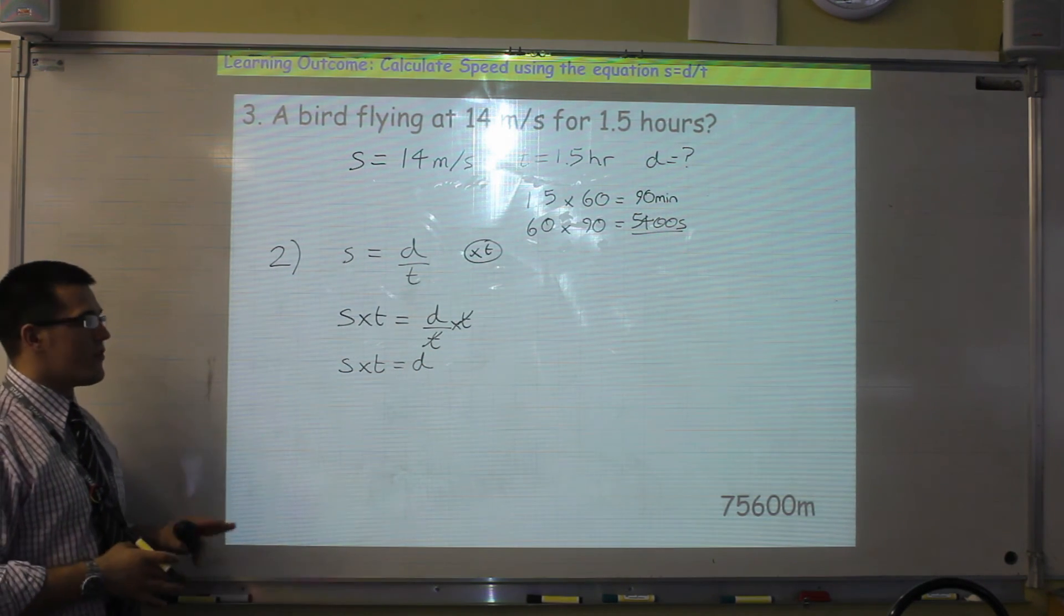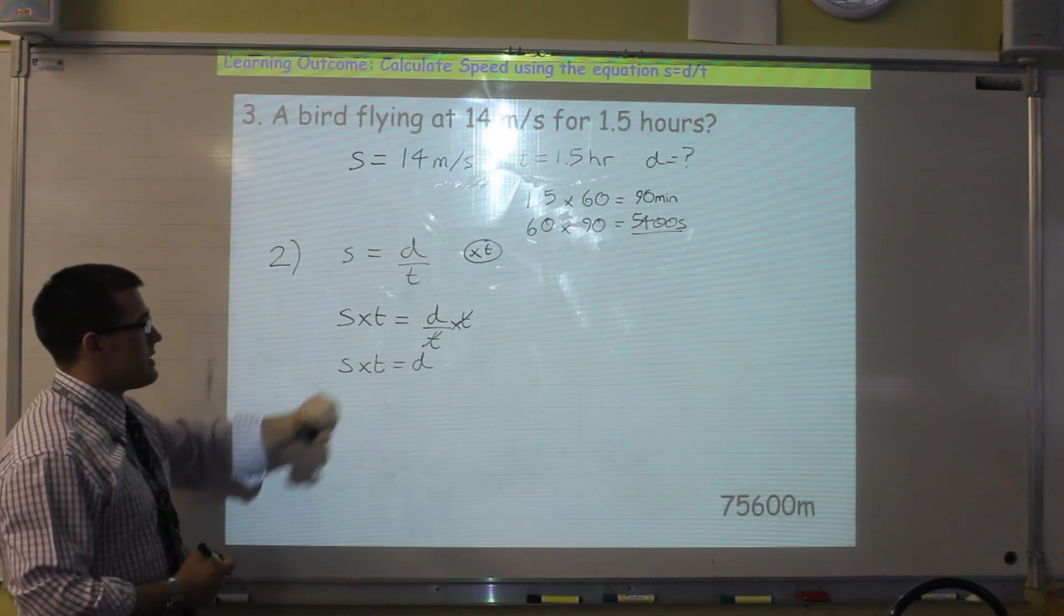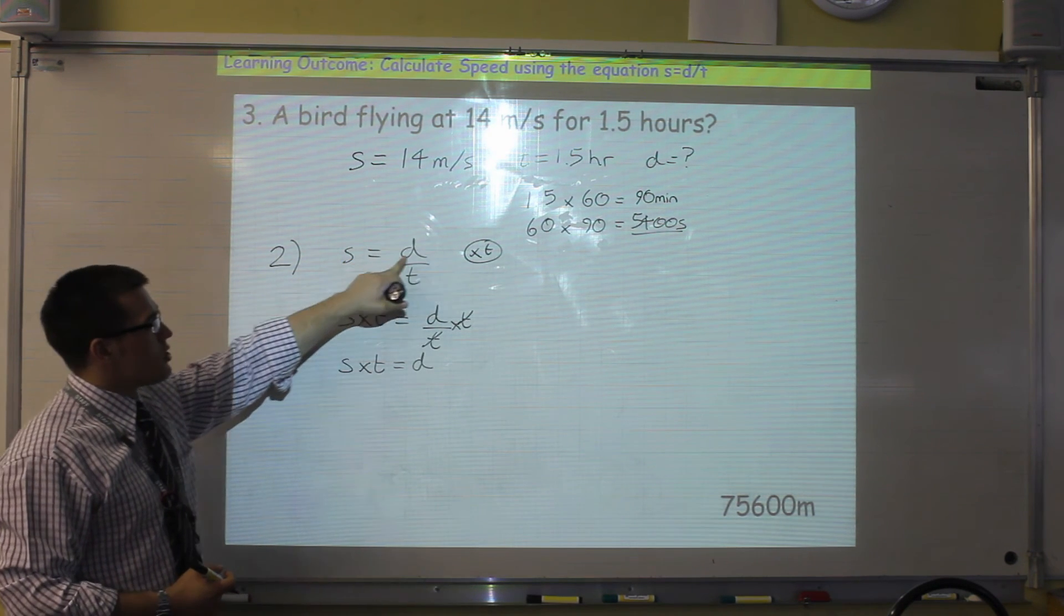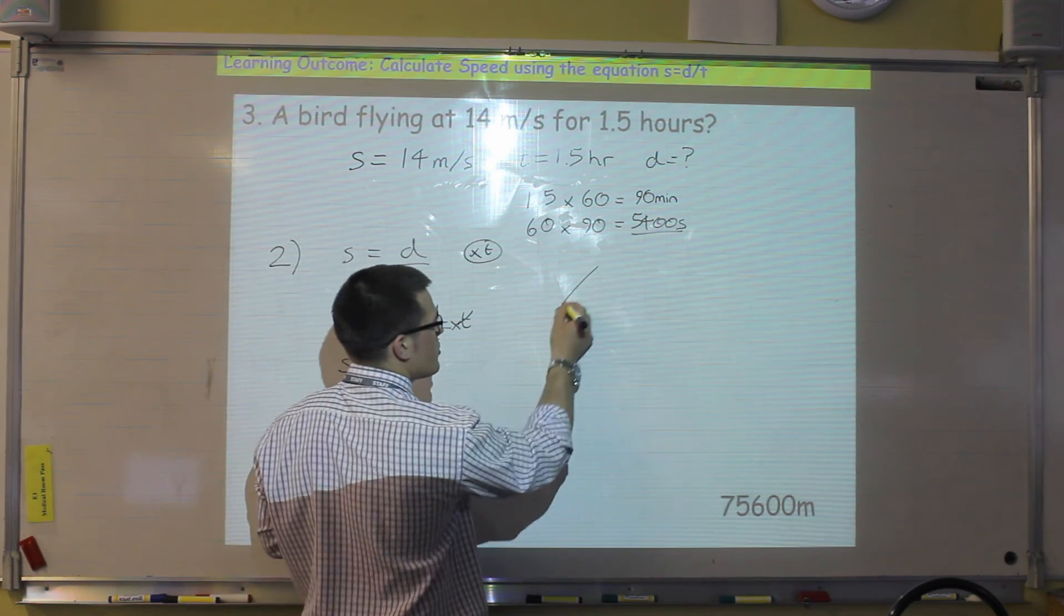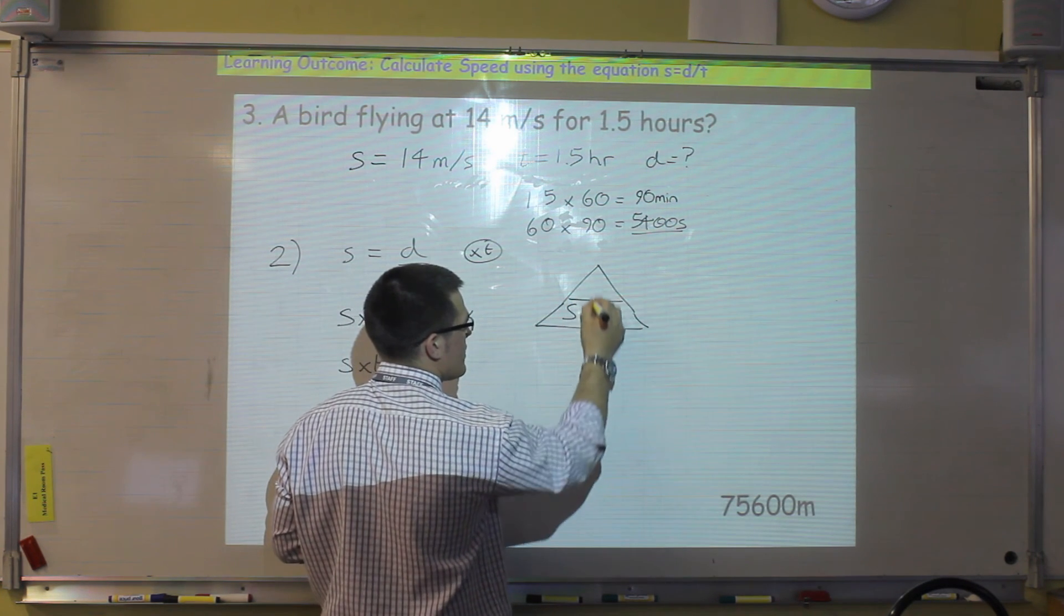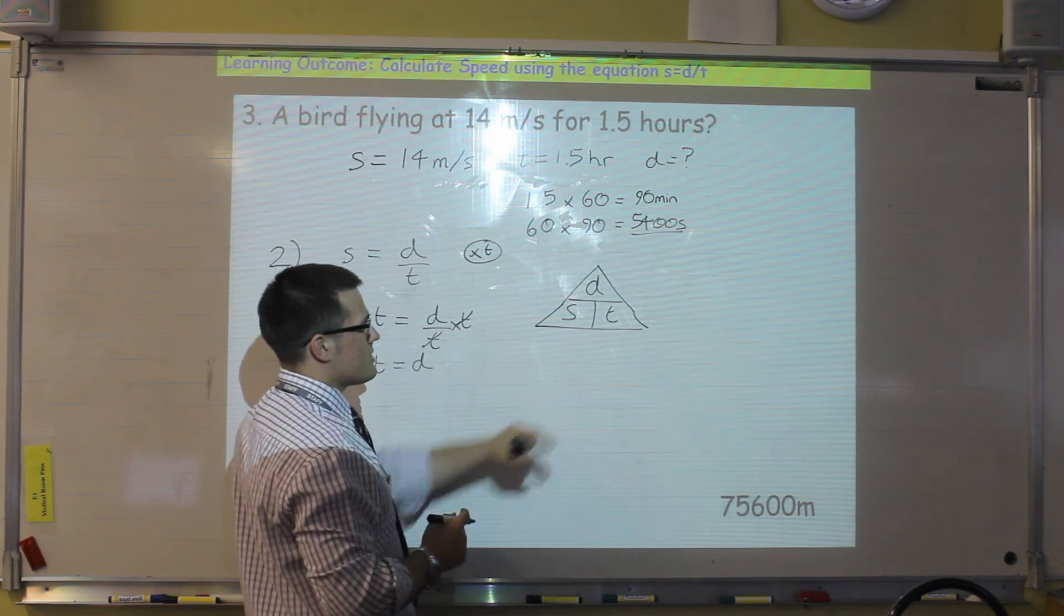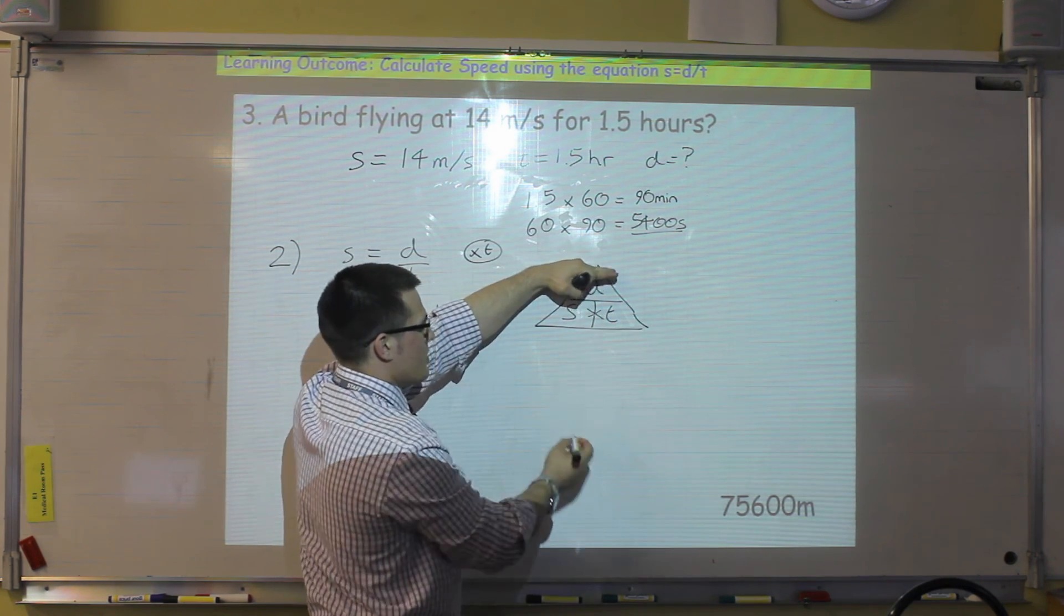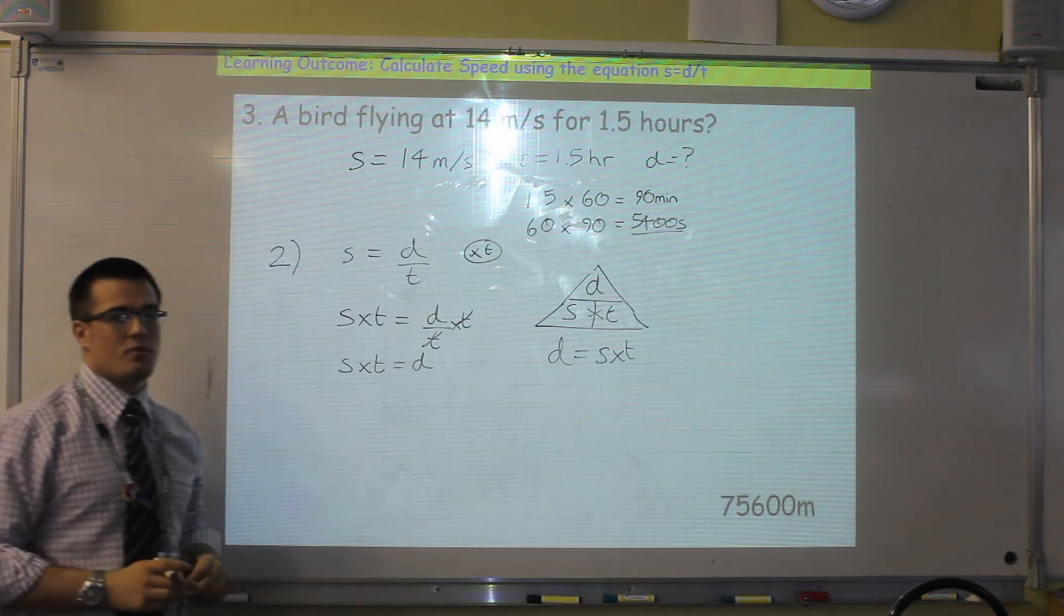Now if you don't feel confident rearranging equations like that, then you can use the triangle method. So the triangles we've already seen, you need to remember that whenever you've got divided by, you put the number on top of the division at the top of your triangle. So our triangle will have distance at the top and speed and time at the bottom. So if I want to calculate the distance, we cover the distance and we can see that it's speed multiplied by time. So we get to the same equation, but using two different methods. And you should use whichever one you feel more comfortable with.